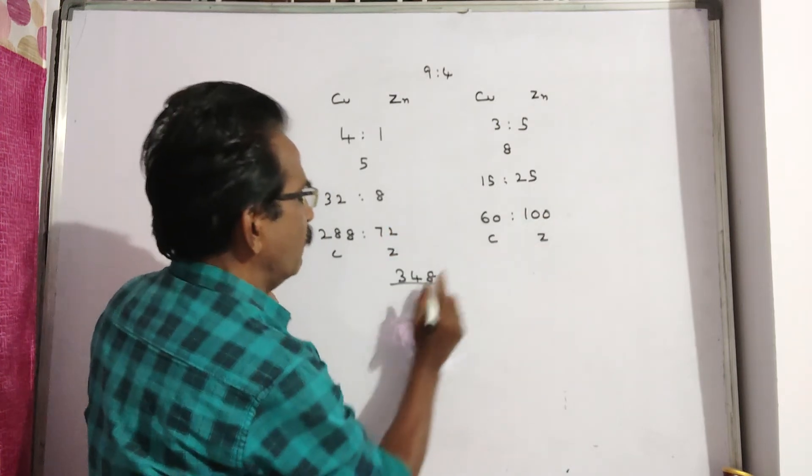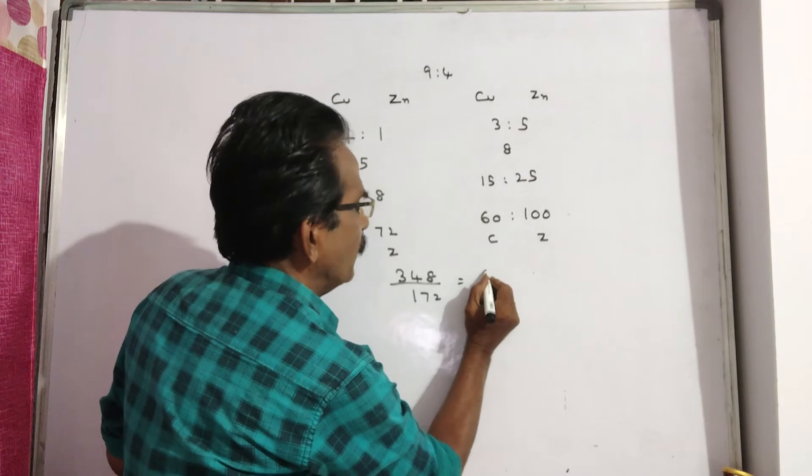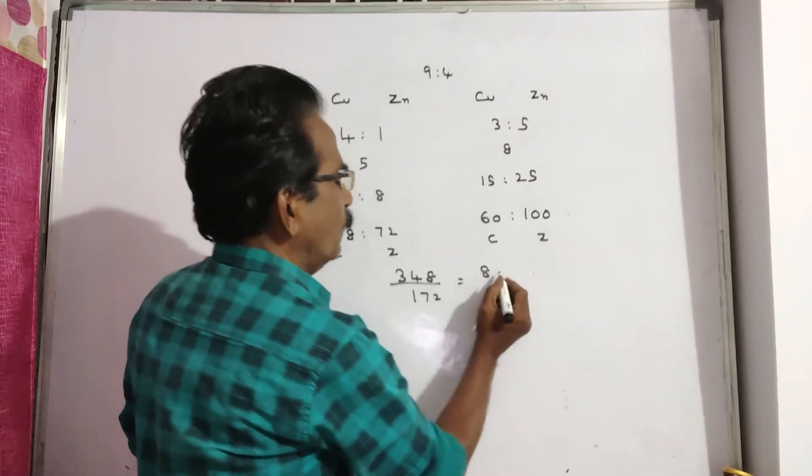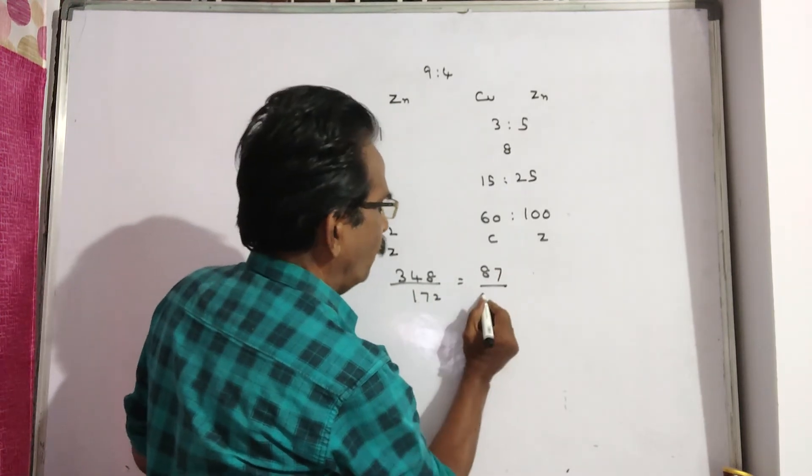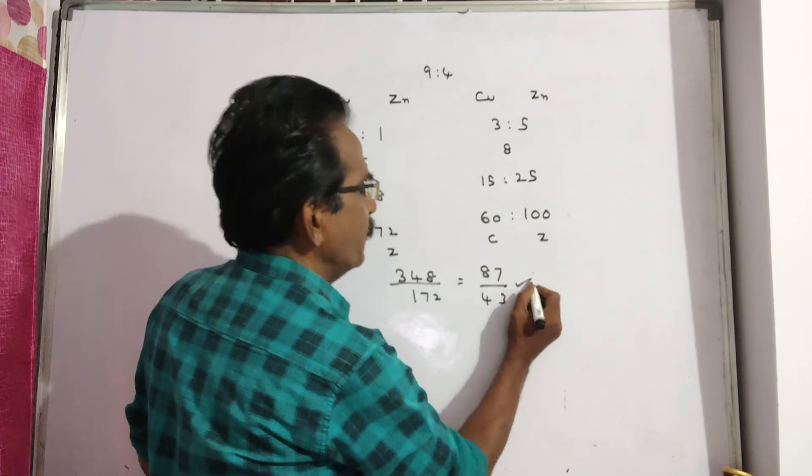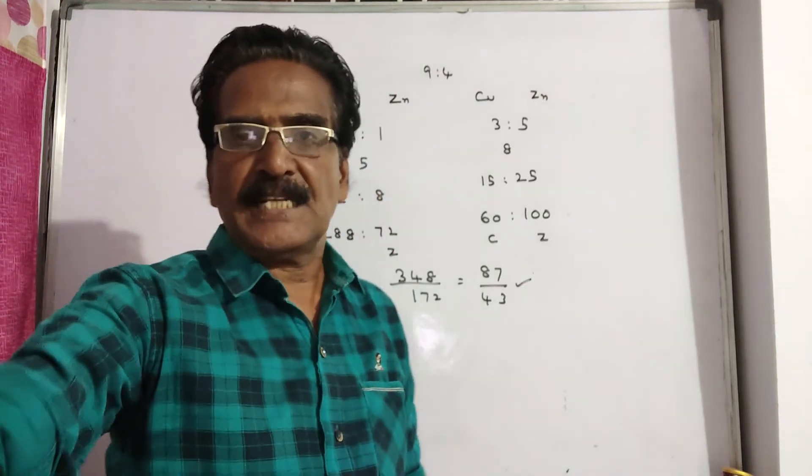Zinc plus zinc: 172. Now dividing by 4: 348 divided by 4 is 87. 172 divided by 4 is 43. So, 87 to 43 is your answer.